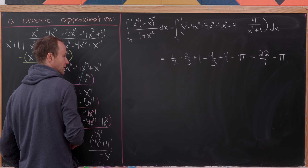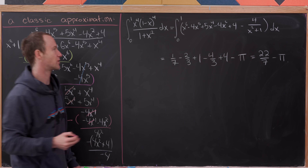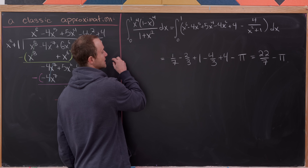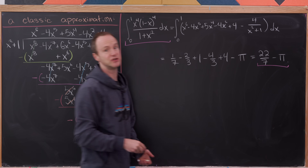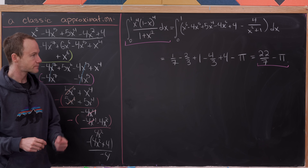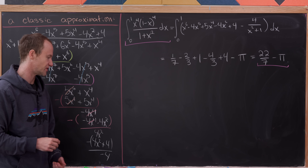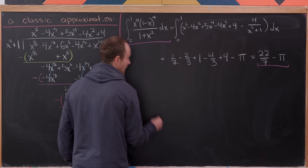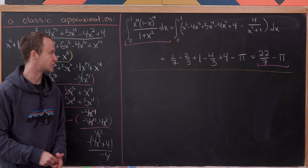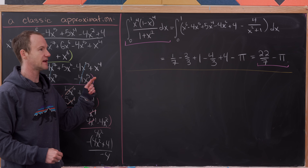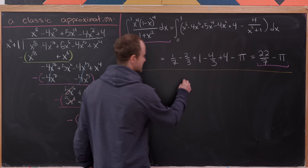That should look familiar — 22 over 7 is a very classic rational approximation to pi, and we derived it by evaluating that integral. So now the question is: how good of an approximation is this? We can partially answer that by finding upper and lower bounds for this integral.